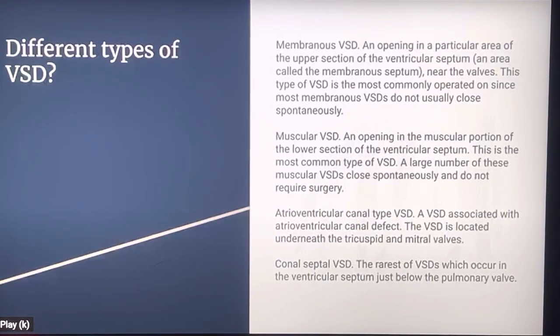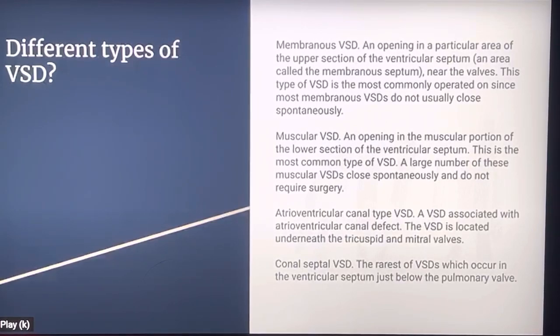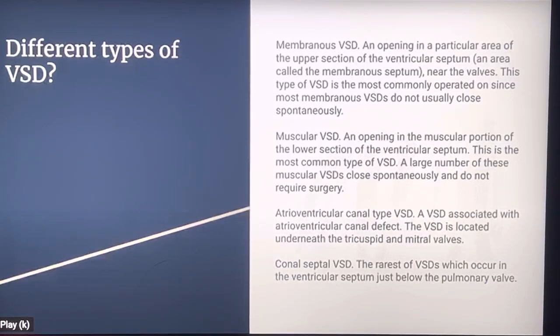Muscular VSD is an opening in the muscular portion of the lower section of the ventricular septum. This is the most common type of VSD. A large number of these muscular VSDs close spontaneously and do not require surgery.